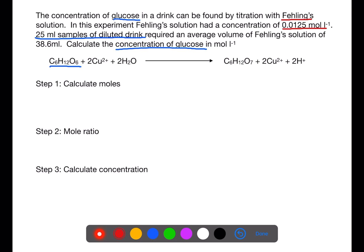It's also told you that you have an average volume of Fehling's solution of 38.6 millilitres. Fehling's solution contains copper 2+ ions.